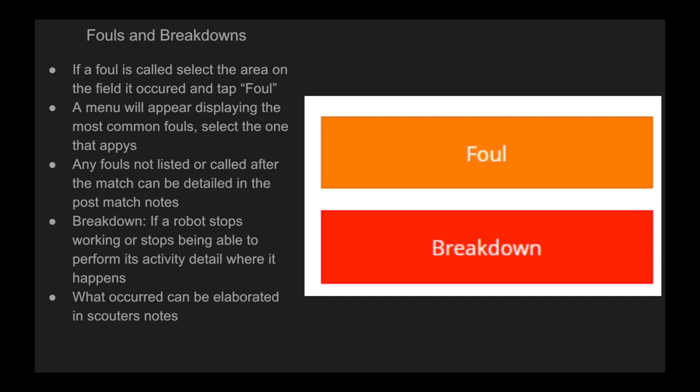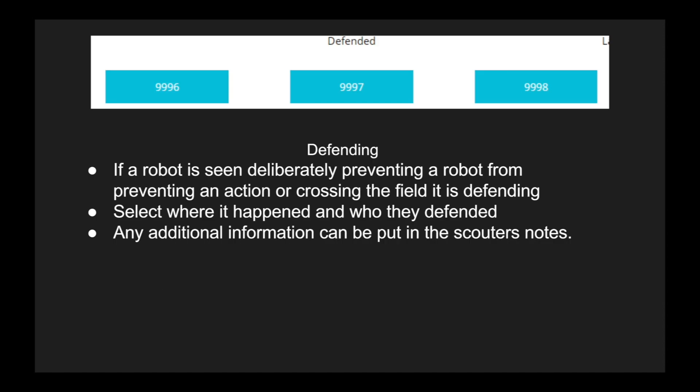If a robot stops working or stops being able to perform its activity, select where it happens and click breakdown. What occurred can be elaborated on in scouter's notes. If a robot is seen deliberately preventing another robot from performing its action or crossing the field, it is considered defending. Select where it applied and who they defended, and any additional information can be put in the scouter's notes.